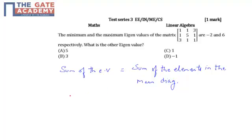So, the sum of the eigenvalues - let us take the unknown eigenvalue as lambda and the two knowns are -2 plus 6.